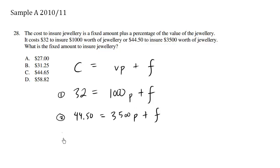I'm just going to copy equation number one again, 32 equals 1000P plus F. And I'm going to subtract the two equations, the top equation minus the bottom equation. So when we have 4450 minus 32, we get 1250. This equals 3500 minus 1000 is 2500P. F minus F disappears, plus zero.